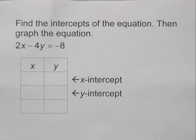Find the intercepts of the equation, then graph the equation. The equation we're working with is 2x minus 4y equals negative 8.